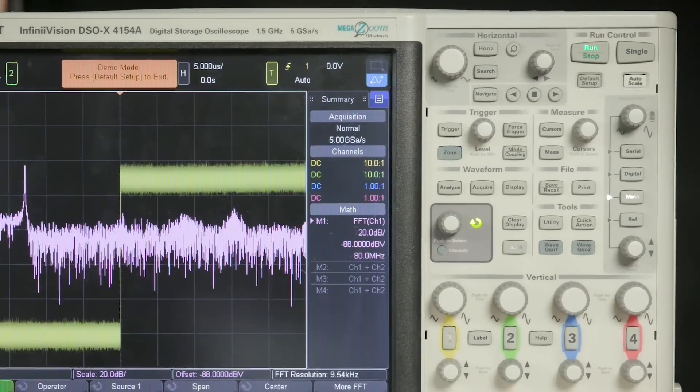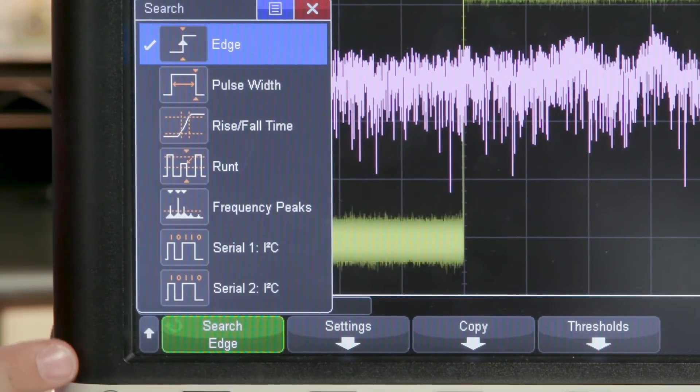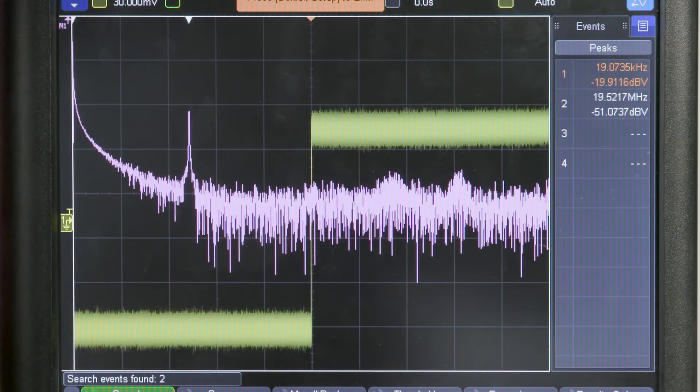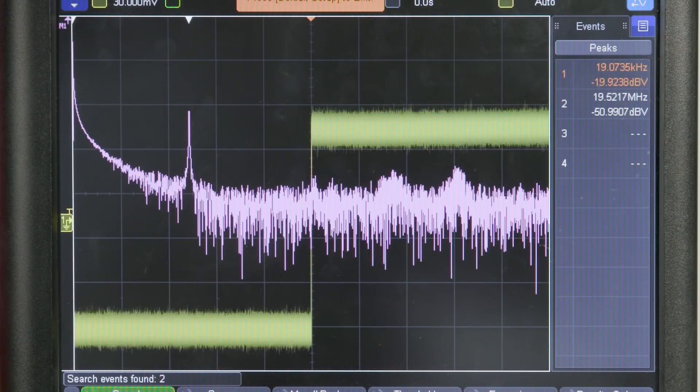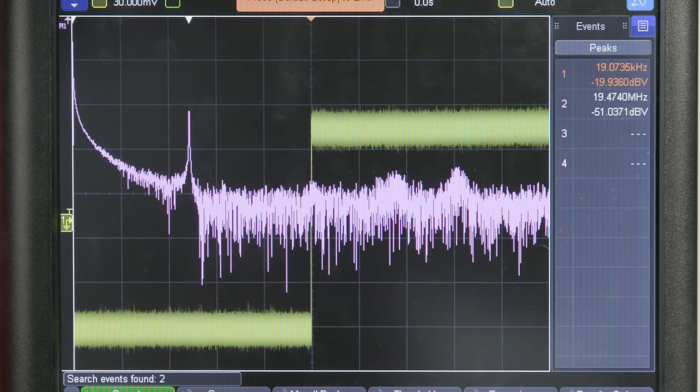To analyze the frequency peaks, you can just press the search front panel button, and then change it to frequency peaks. Now you can scroll through the various frequency peaks on screen and verify that what you expect to see is actually there and debug any components that you are seeing that shouldn't be there.